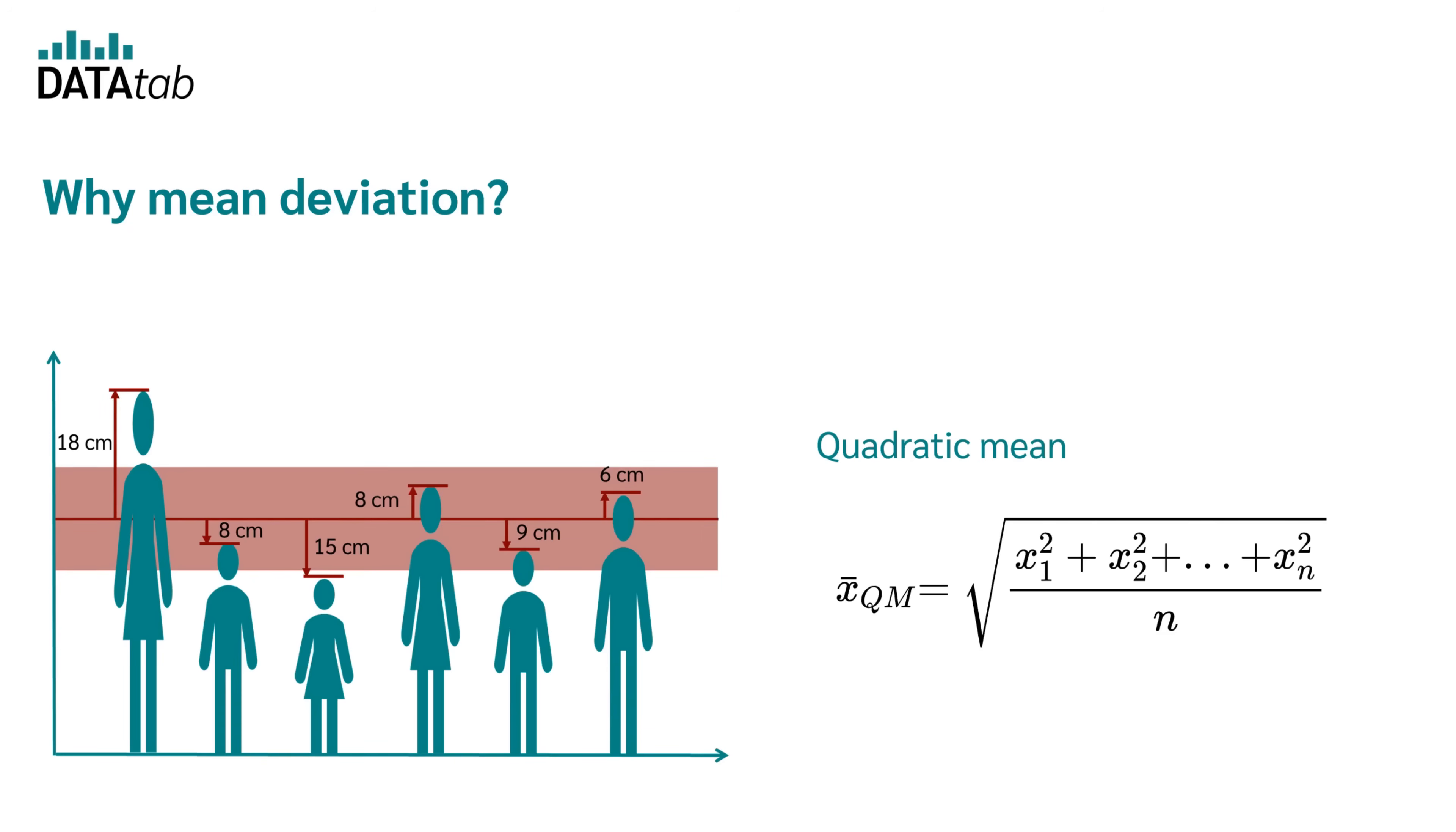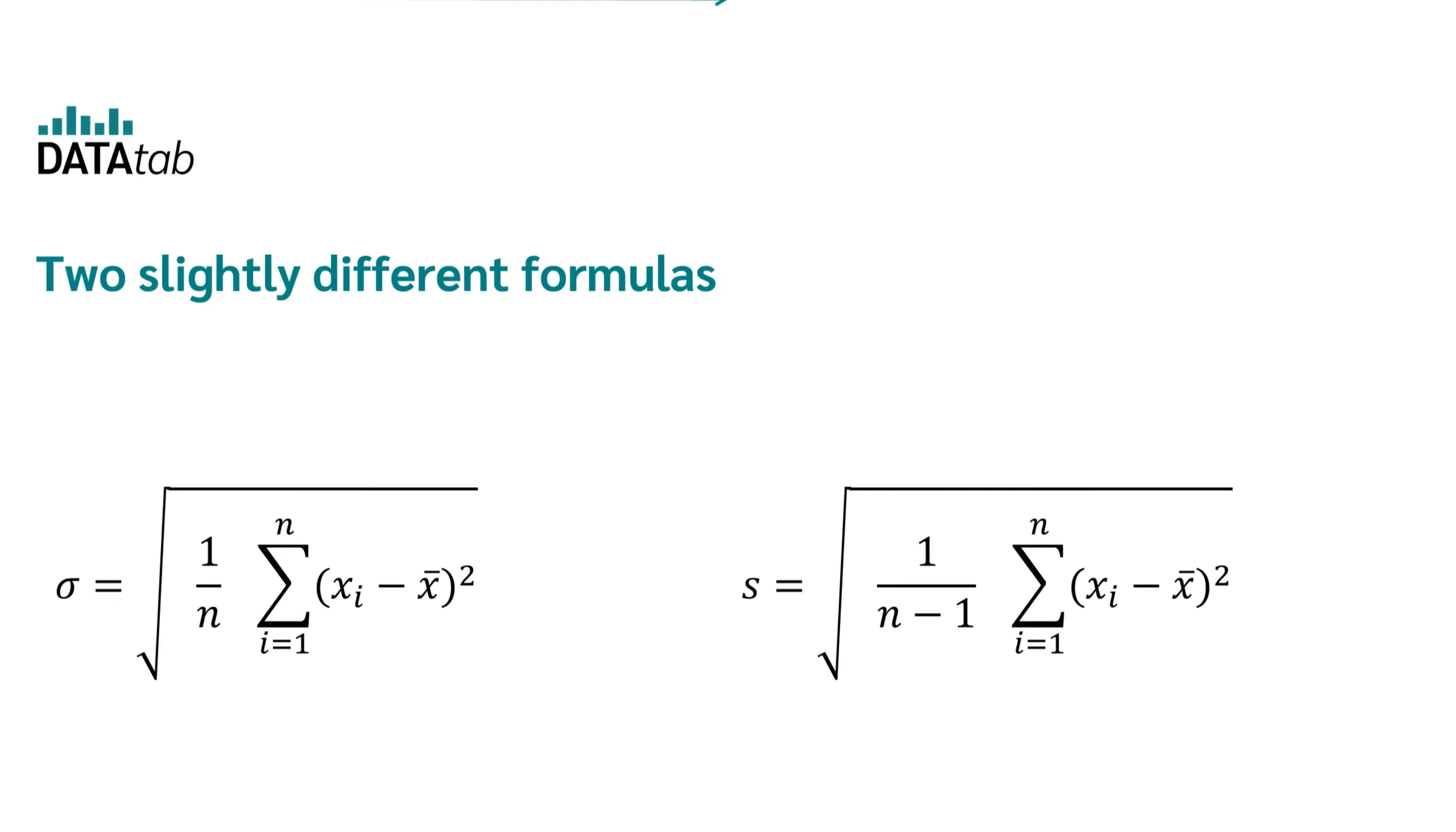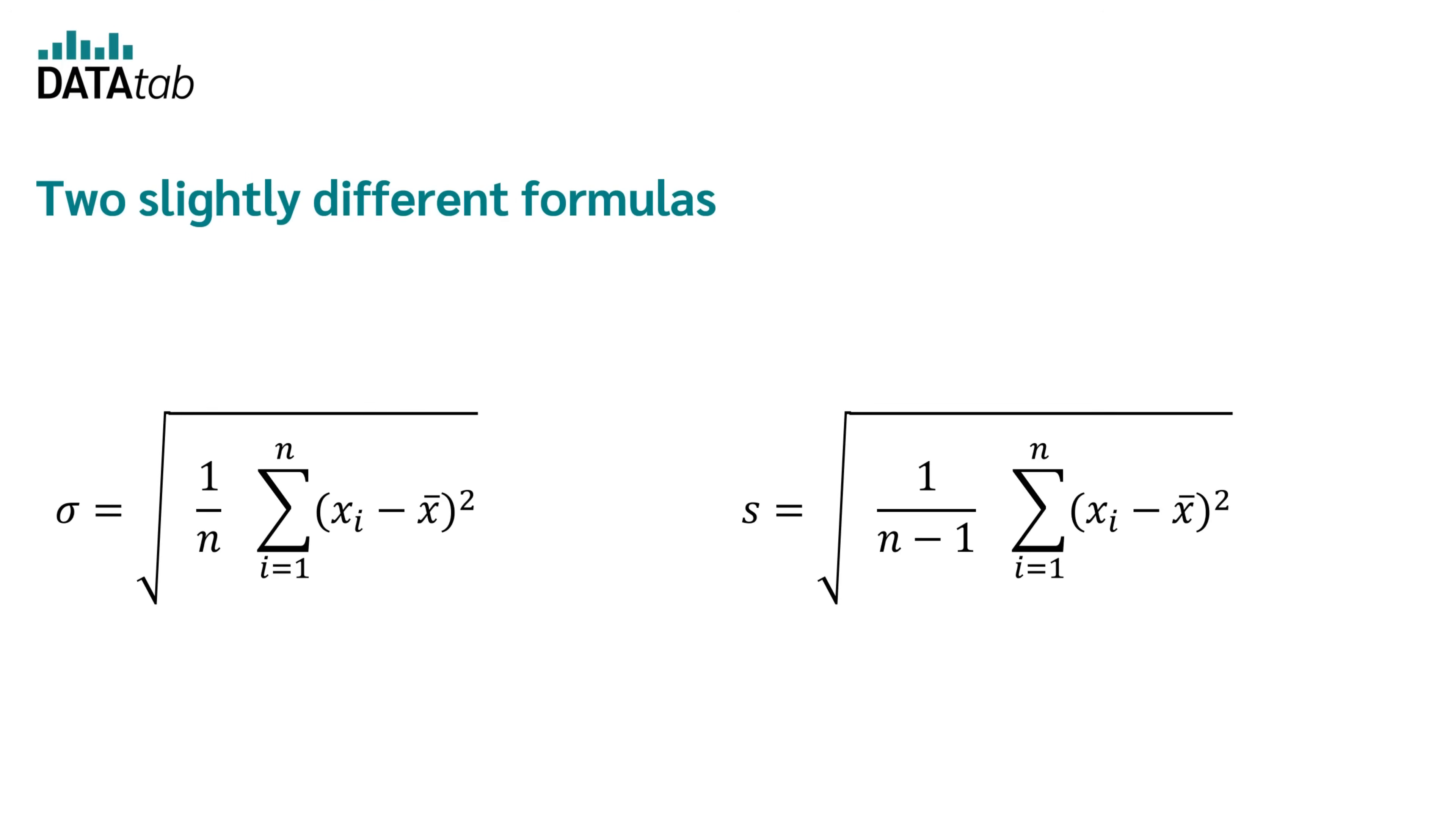So far so good, but now there's one more thing to consider. There are two slightly different formulas for the standard deviation. In the first formula, there is a deviation by n and in the other one, there is a deviation by n-1. But why that? Why are there two different formulas?